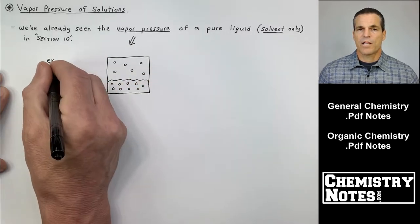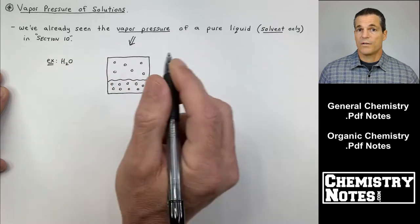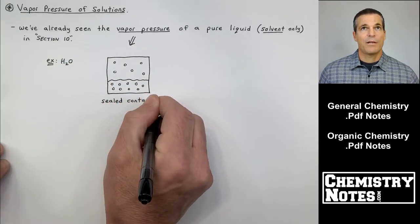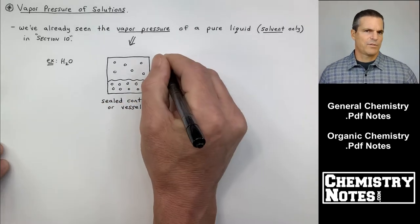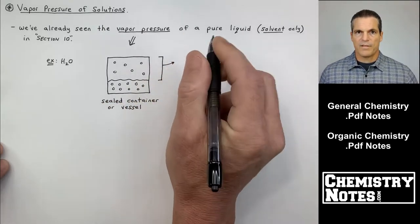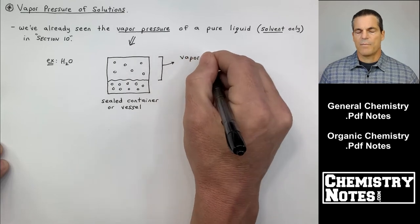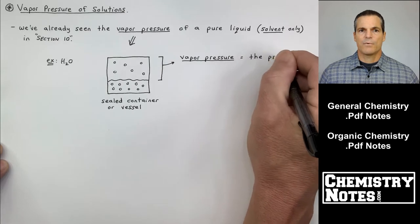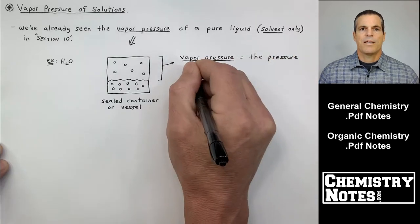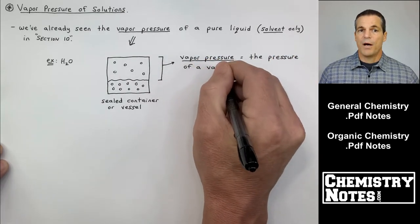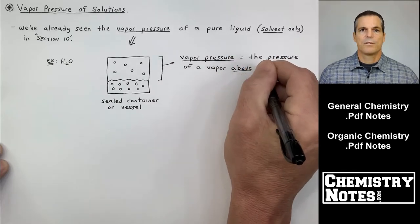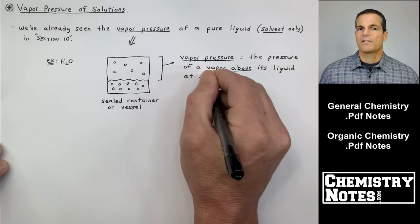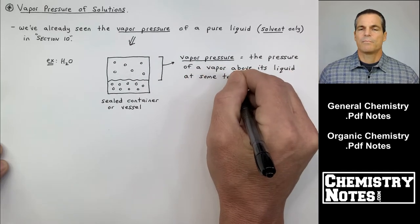For the most part in general chemistry your solvent is water if it's a polar solvent, and I'm going to go out on a limb here and say it's hexane if it's a non-polar solvent usually. But don't hold me to that. Certainly water is the most common solvent. So as an example I've drawn water and here's a sealed container or vessel. And the pressure above that liquid is the vapor pressure.